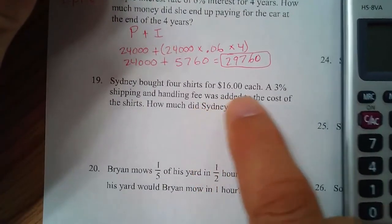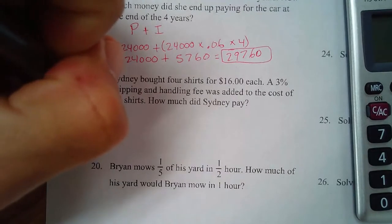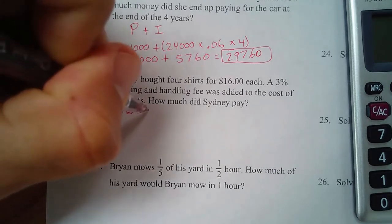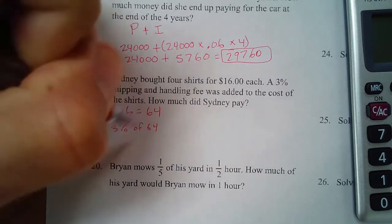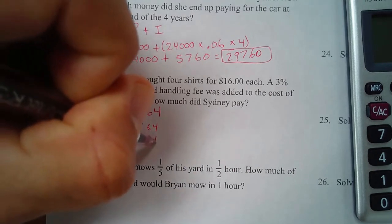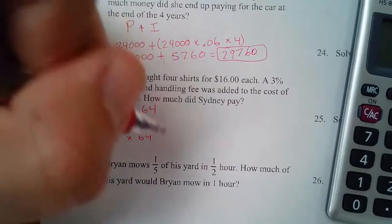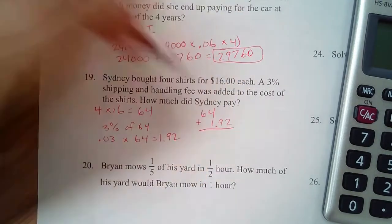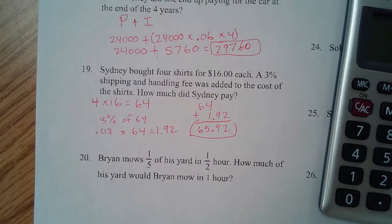Number 19: Sydney bought 4 shirts at $16 each — that's $64. A 3% shipping fee is 0.03 times $64, which is $1.92. Adding $64 plus $1.92 gives a total of $65.92.